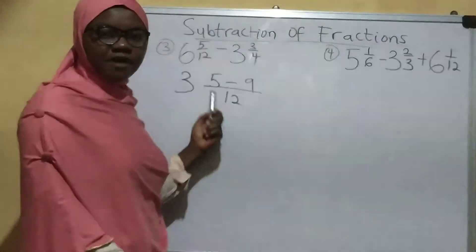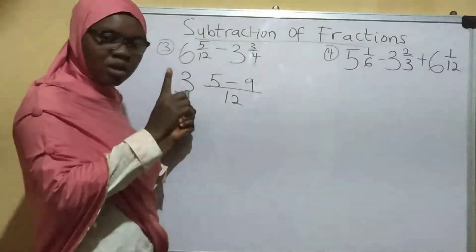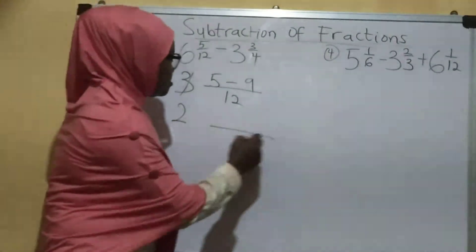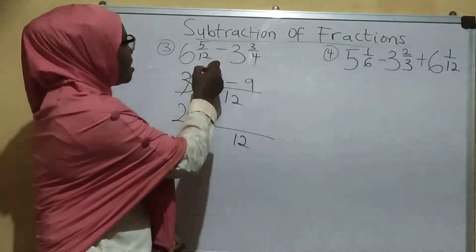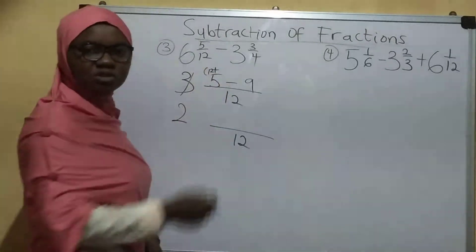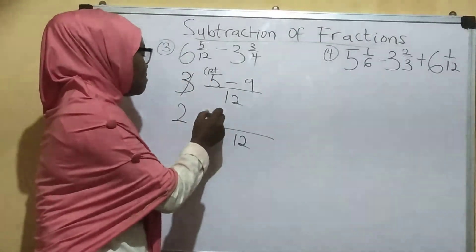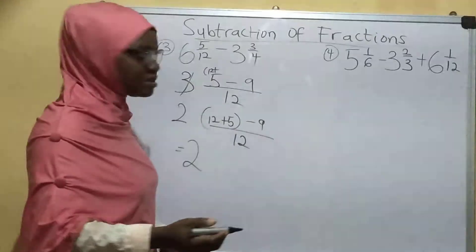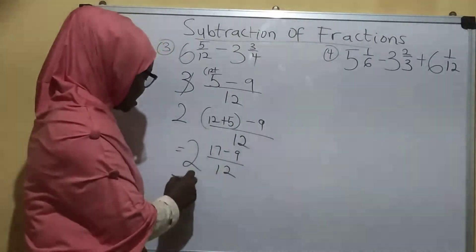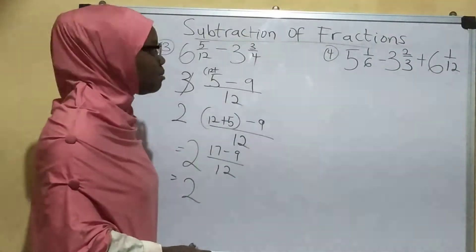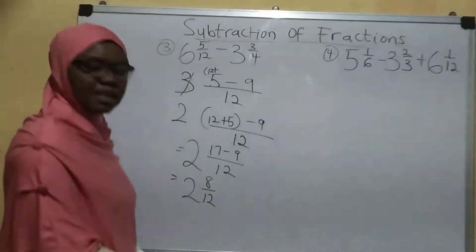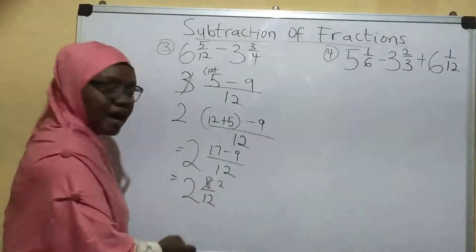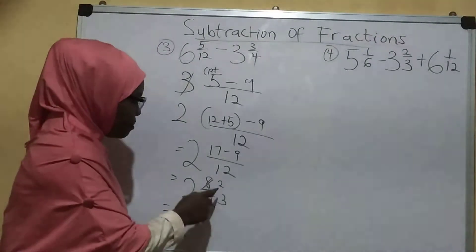So I need to borrow 1 from the whole number. That 1 becomes 12, and I add it to the 5. So when I borrow 1 from 3, it remains 2, and I still have my fraction part. The borrowed 1 becomes 12, and I add it to the 5, giving me 12 plus 5, which is 17. So now it's 17 minus 9 over 12, which gives 8 over 12. The whole number is 2. I can simplify 8 over 12 further by dividing by 4: 8 divided by 4 is 2, and 12 divided by 4 is 3. So my final answer is 2 and 2 over 3.